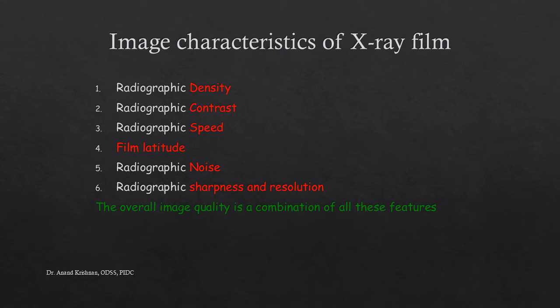Now we briefly look at the image characteristics of an x-ray film, because when we talk about processing and achieving a good quality radiograph, we need to understand what makes a good image. The characteristics of an x-ray film include: radiographic density, radiographic contrast, radiographic speed, film latitude, radiographic noise, radiographic sharpness, and resolution. Overall image quality is a combination of all these features.